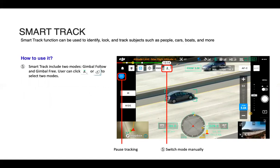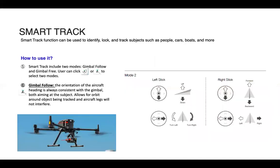SmartTrack has two gimbal modes just like the drone itself. We have gimbal follow and gimbal free. First off, talking about gimbal follow. So if you look at the picture of the drone there, the aircraft and the gimbal are both facing forward. And in SmartTracking, as the gimbal yaws, you can kind of think of it like spinning like a top to the left or the right, the gimbal is going to go ahead and follow and stay pointed towards the front of the aircraft. And this allows for orbiting around an object while being tracked. And also the aircraft legs will not interfere.